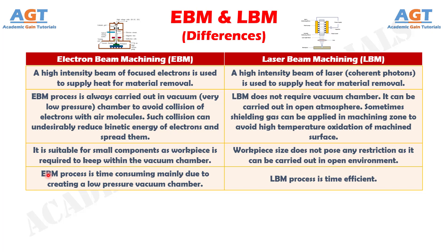Difference number 4: The electron beam machining process is time consuming, mainly due to creating a low pressure vacuum chamber, whereas the laser beam machining process is time efficient.